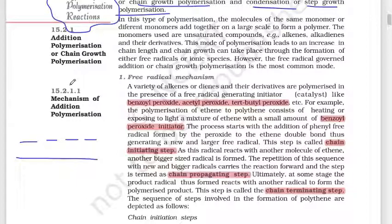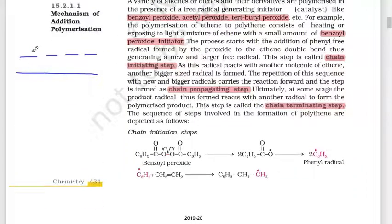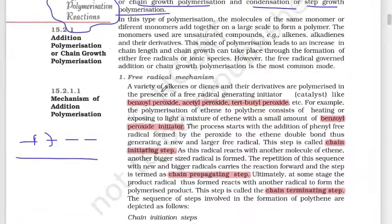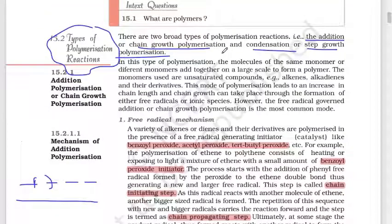In condensation type polymerization, a small molecule like a water molecule, alcohol, etc. is released and eliminated. The elimination of small molecules results in condensation polymers. In this video, we will talk about addition or chain growth polymerization.